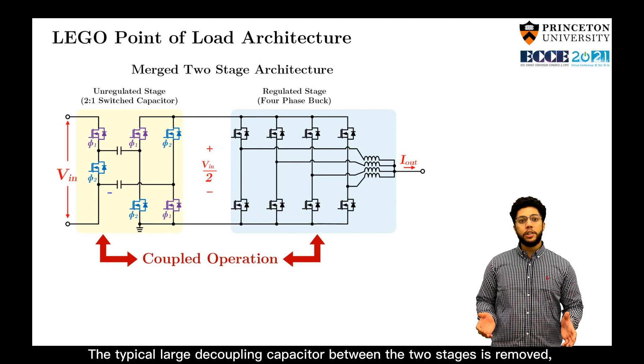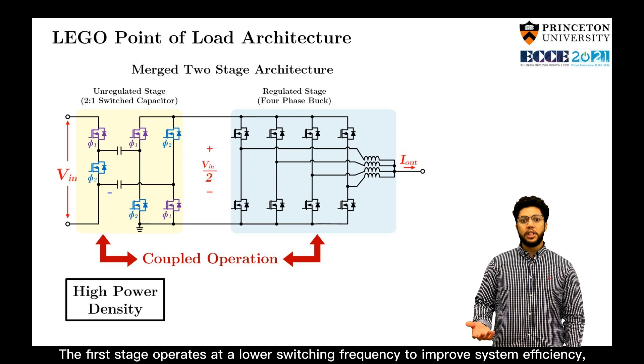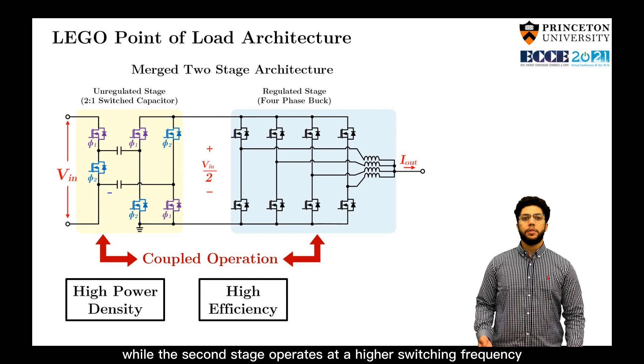The typical large decoupling capacitor between the two stages is removed, enabling higher power density. The first stage operates at a lower switching frequency to improve the system efficiency, while the second stage operates at a higher switching frequency to improve the system speed.